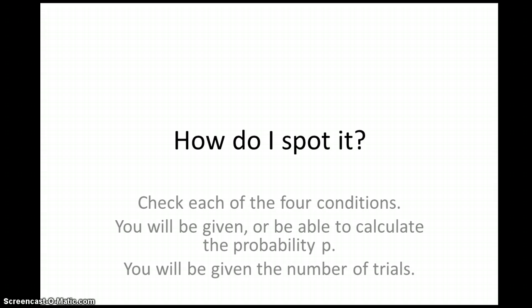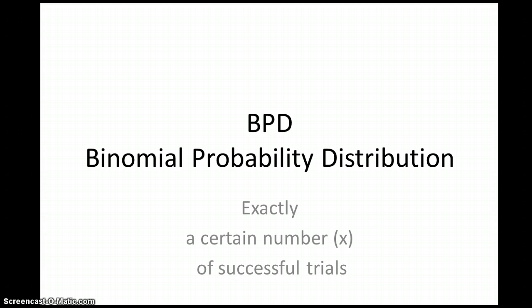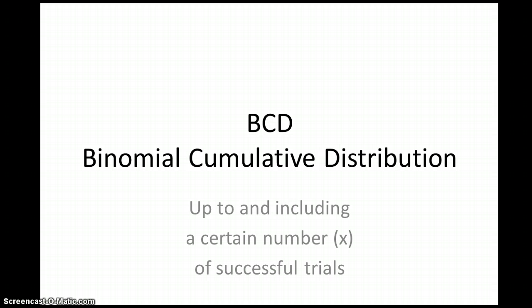I don't know if this helps. How do you spot it? Check out the four conditions. You'll be given, or you'll be able to calculate, the probability P, and you'll be given the number of trials. The BPD button is when you're looking for exactly a certain number of successful trials. The BCD button is when you're looking for up to and including a certain number of successful trials.